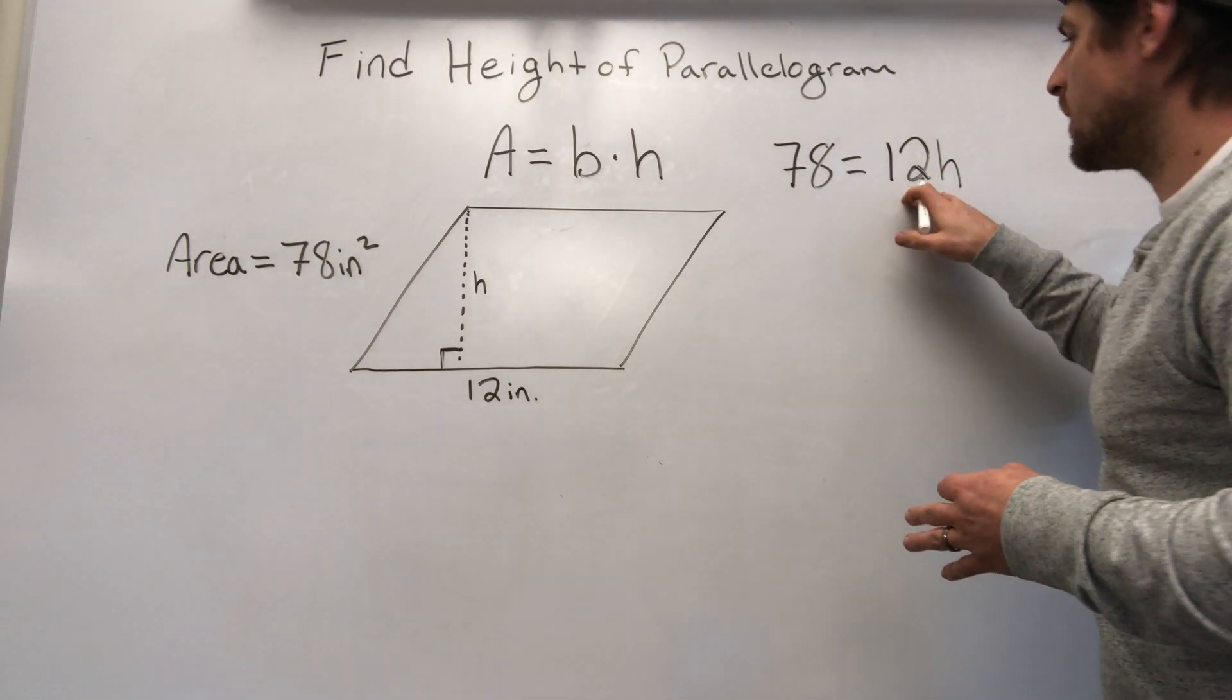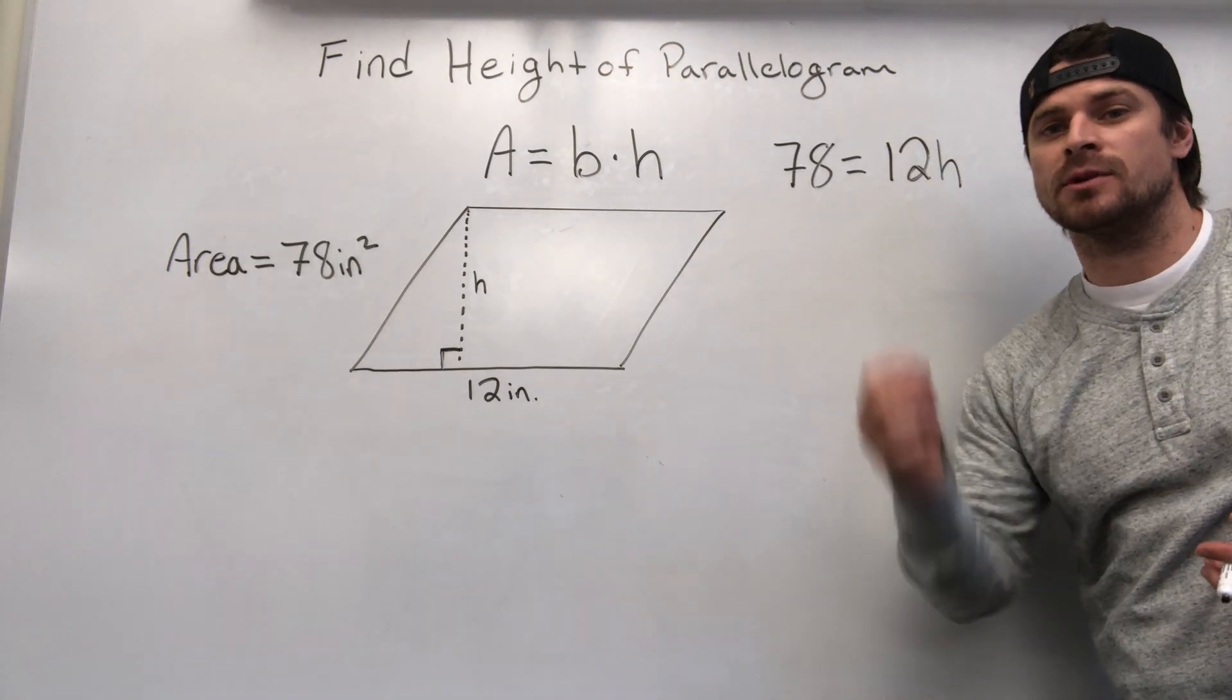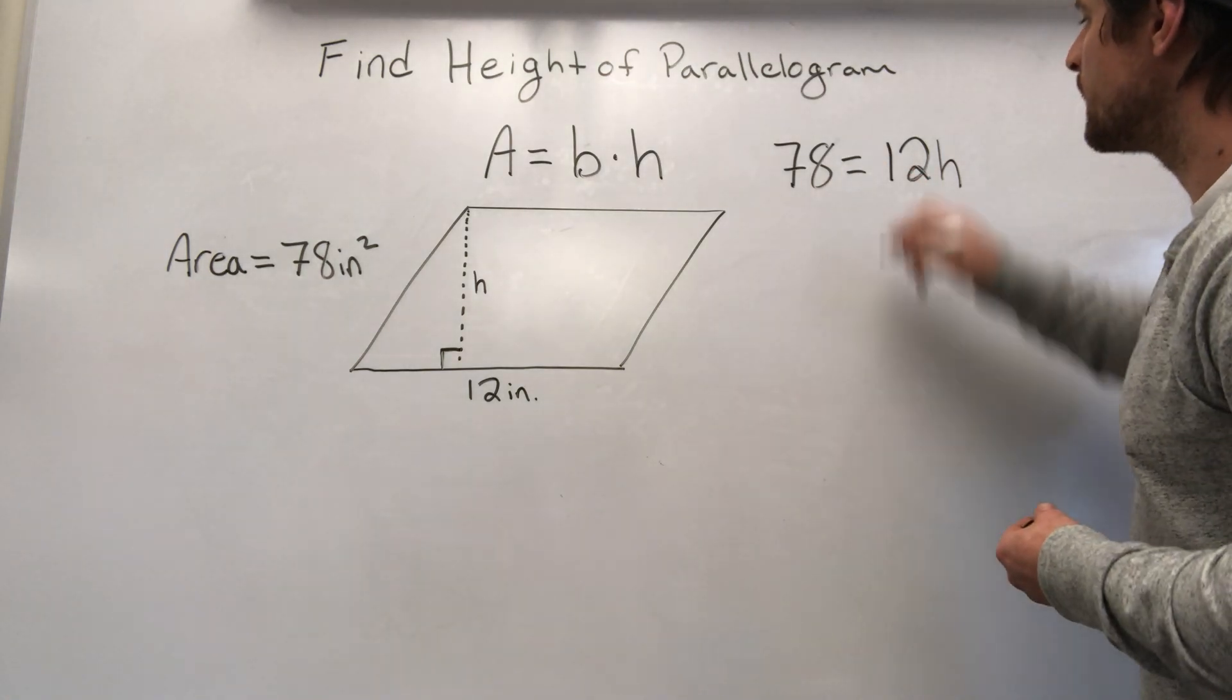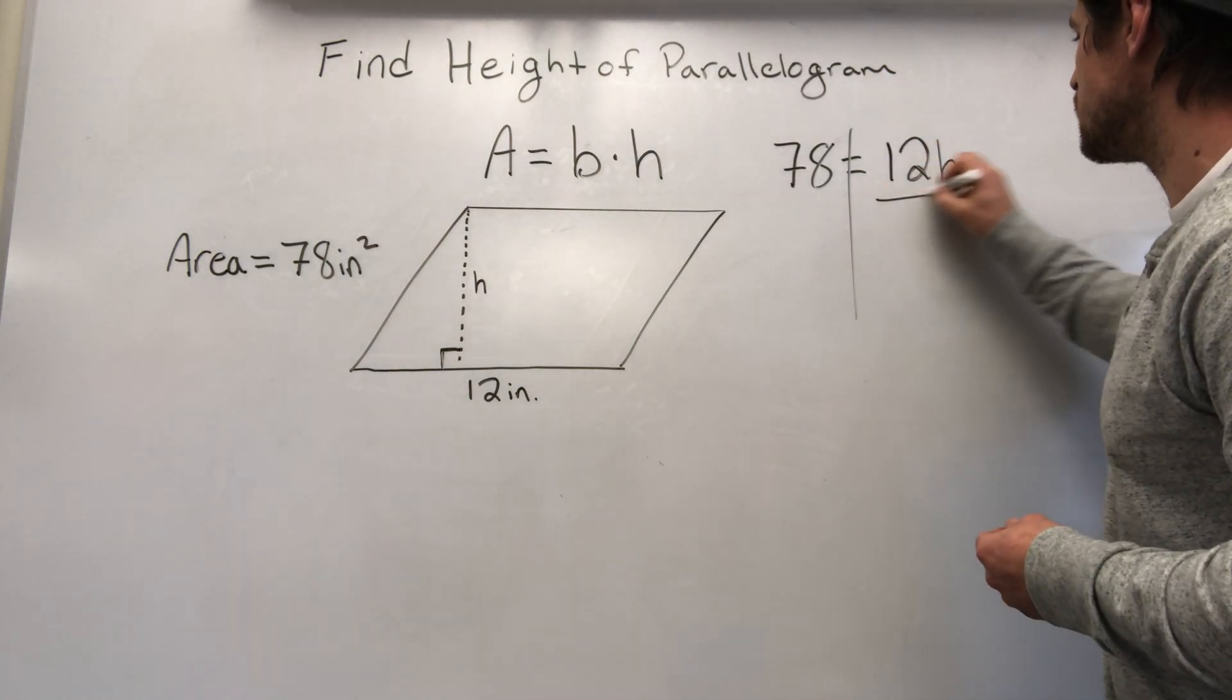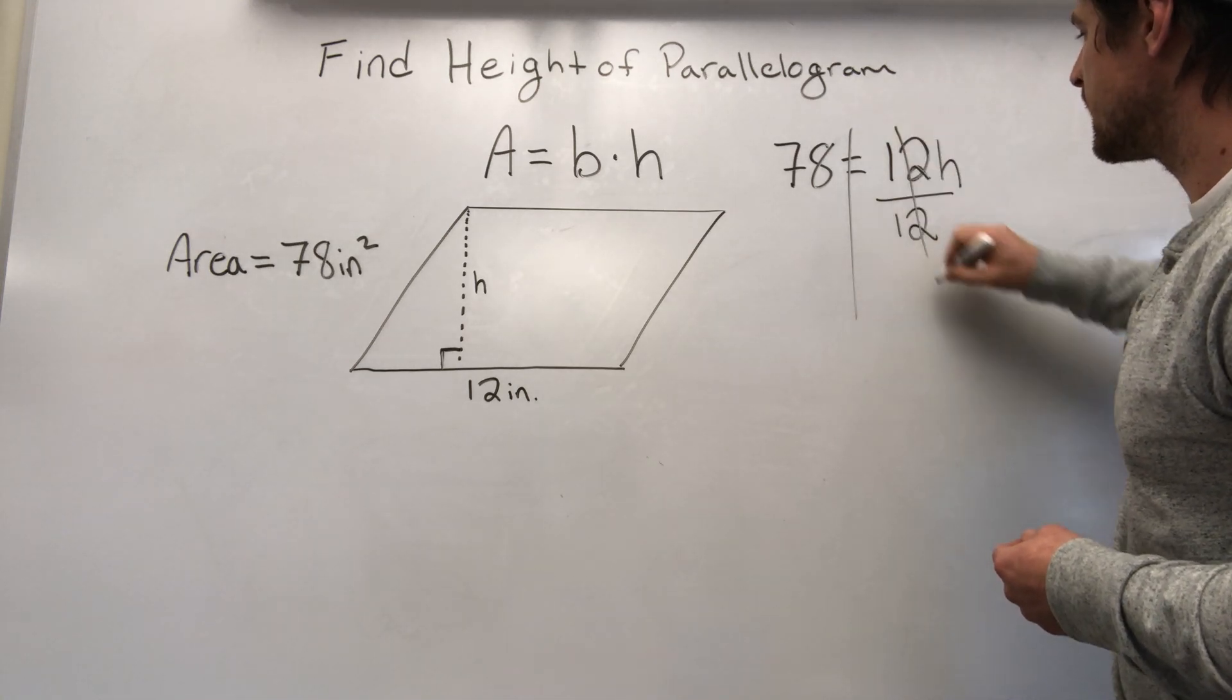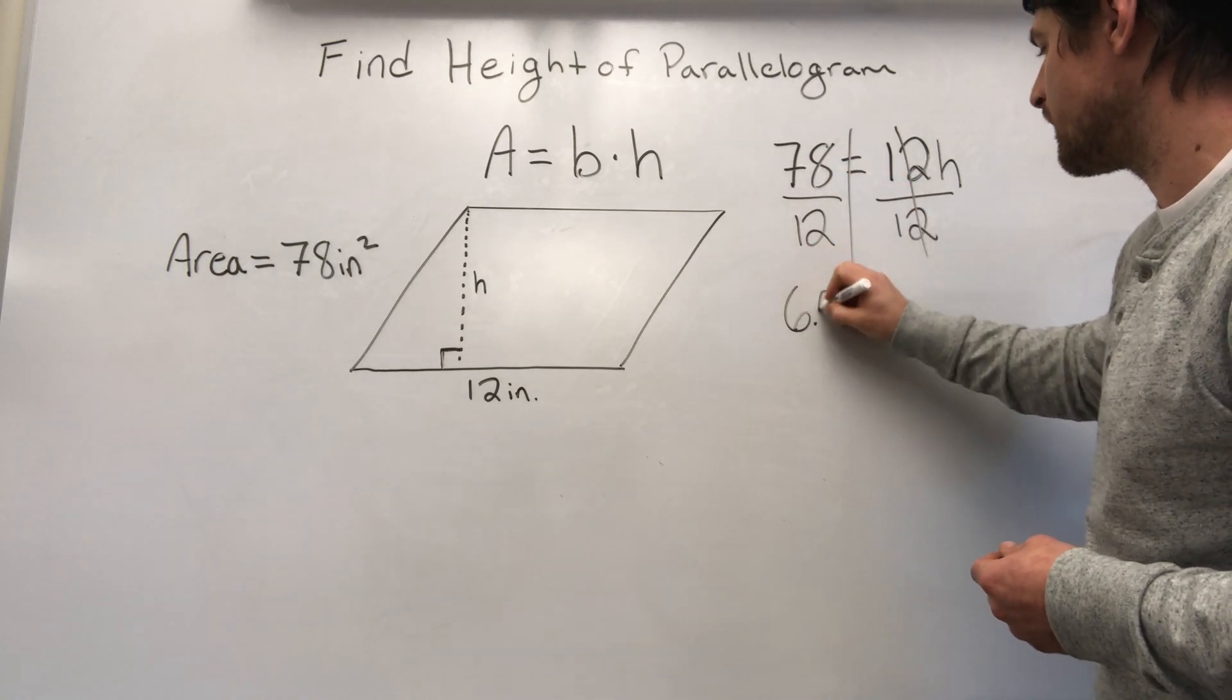If I want to get rid of that 12, there's a couple of ways I can do that. I can use inverse operation, and sometimes you might be able to mentally just figure it out. 12 times what equals 78? But if you don't know how to mentally do it, use inverse operations. Opposite of multiplying is dividing. Cancels. 78 divided by 12 will give you 6.5.